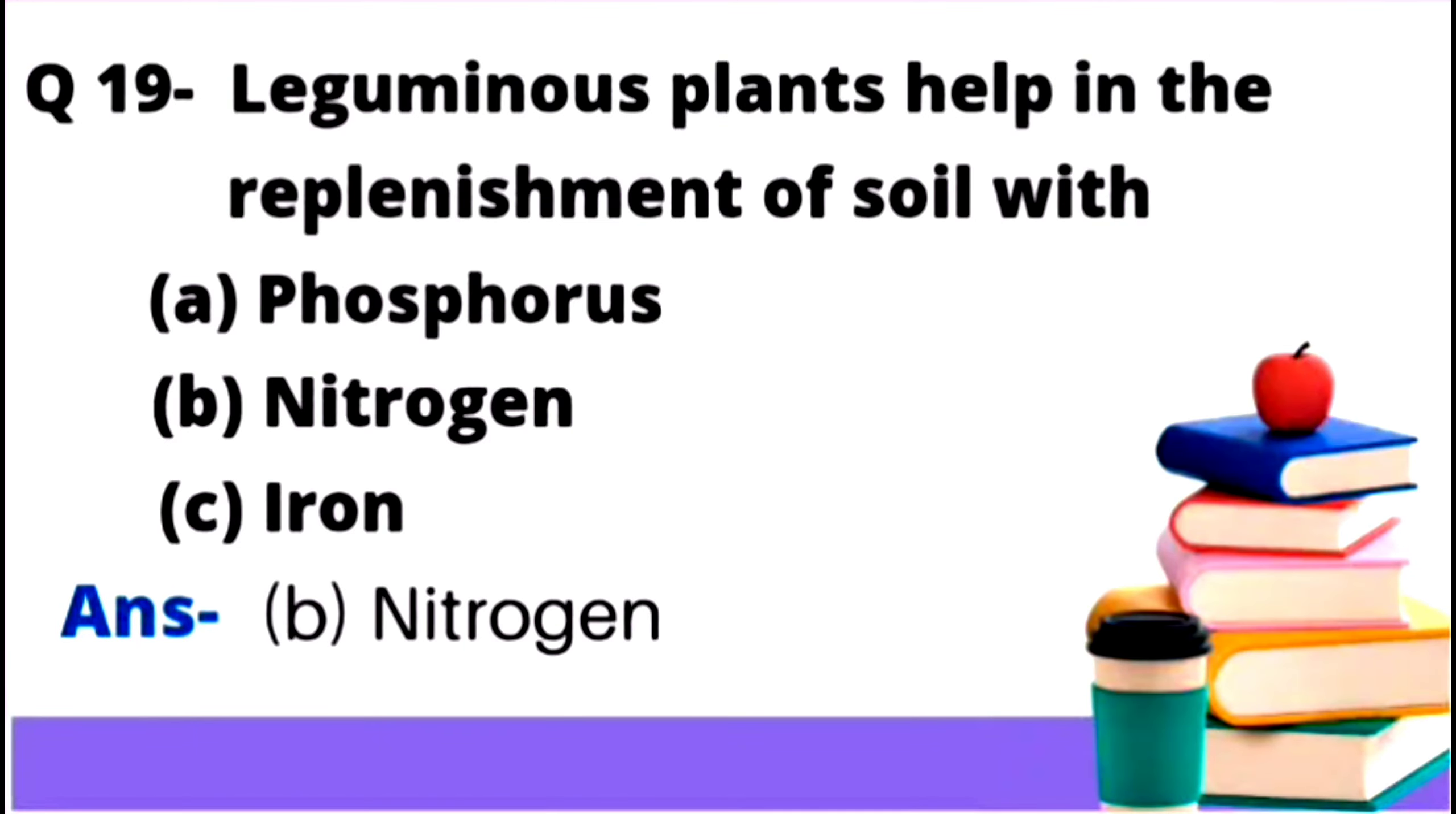Question number 19: Leguminous plants help in the replenishment of soil with option A phosphorus, option B nitrogen, and option C iron. What nutrients do leguminous plants provide to the soil? The right answer will be option number B, that is nitrogen.